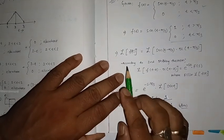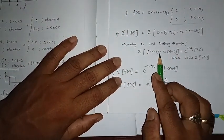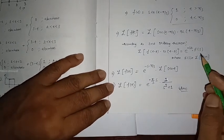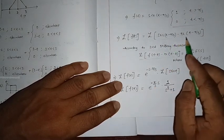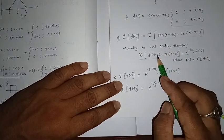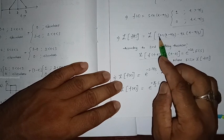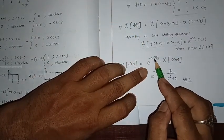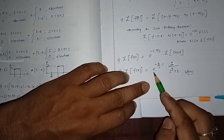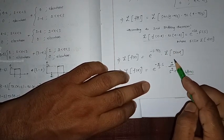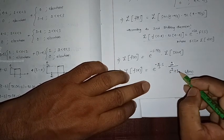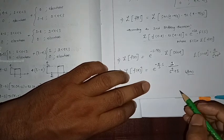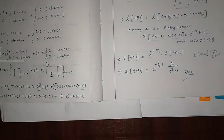Applying the Second Shifting Theorem: L{f(t minus a)u(t minus a)} equals e to the power minus sa times F(s). Here a equals π/3, and f(t) equals sin(t). So the Laplace transform of f(t) equals e to the power minus (π/3)s times the Laplace transform of sin(t), which equals e to the power minus (πs/3) times 1 over (s² plus 1).